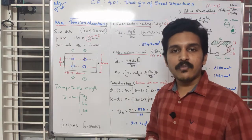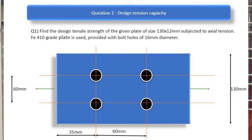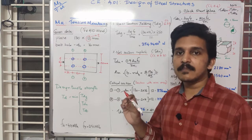We are given a plate of size 130 by 12 mm using FE410 grade steel. The bolt hole diameter is 16 mm and the plate is under tension on two sides. The three failure conditions we have to check are gross section yielding, net section rupture, and block shear failure.